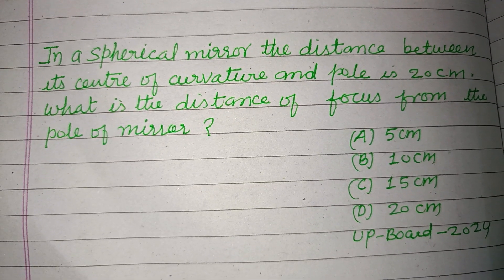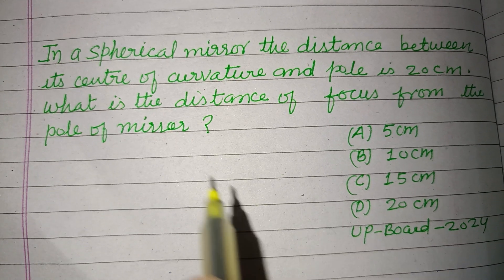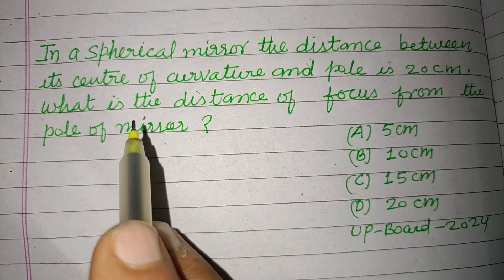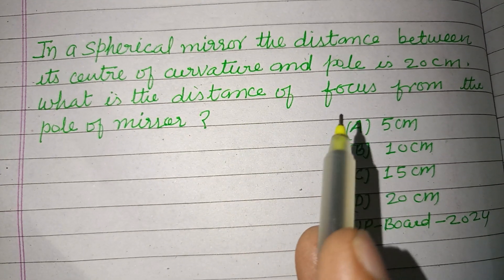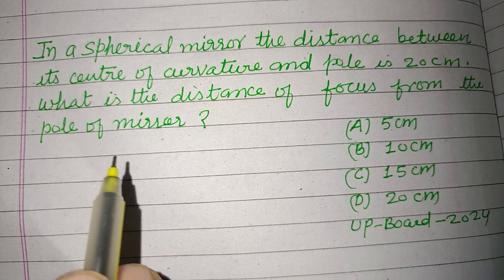Hello viewers, warm welcome to this YouTube channel. This is a question from UP Board 2024. In a spherical mirror, the distance between its center of curvature and pole is 20 centimeters. What is the distance of focus from the pole of the mirror?